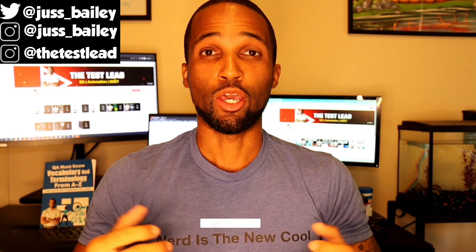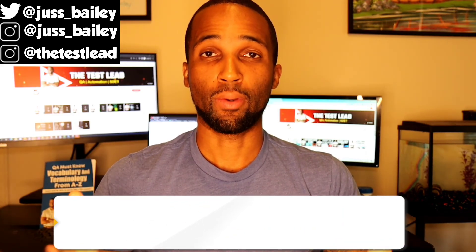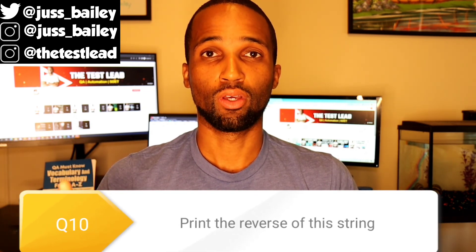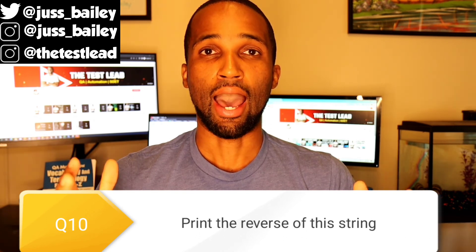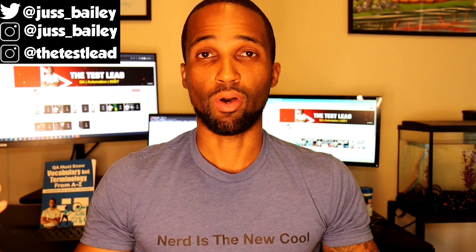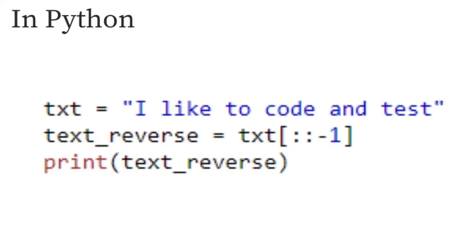Question ten: in whatever programming language you're most comfortable with, print the reverse of this string: 'I like to code and test.' We'll use Python because it's the easiest. In Python: text = 'I like to code and test', then text_reverse = text[::-1], which reverses it. Then print the new variable text_reverse.